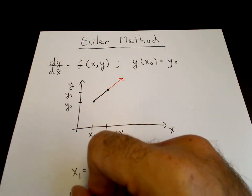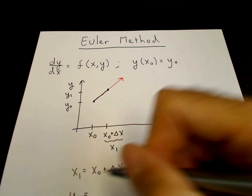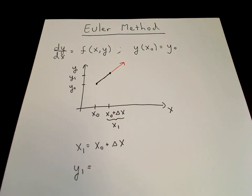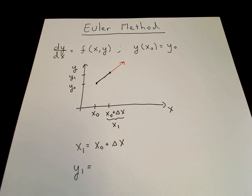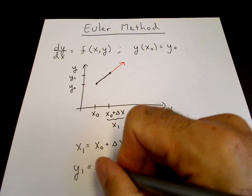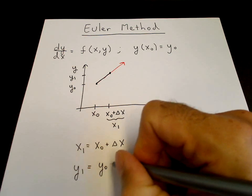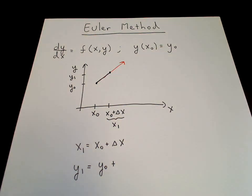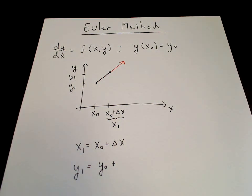Well x₁ we see is x₀ + Δx. y₁ is the value of y obtained by moving along the tangent line from x₀, y₀ to x₁, y₁.